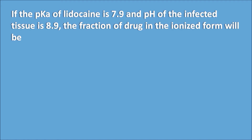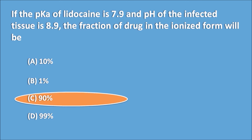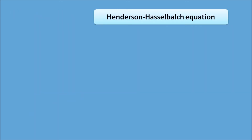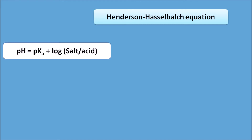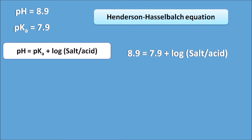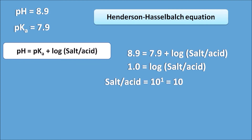If the pKa of lidocaine is 7.9 and the pH of the infected tissue is 8.9, the fraction of the drug in the ionized form will be: A. 10%, B. 1%, C. 90%, or D. 99%. The right answer is 90%. Using the Henderson-Hasselbalch equation — pH = pKa + log(salt/acid) for a weak acid — with pH 8.9 and pKa 7.9, we get 8.9 = 7.9 + log(salt/acid), so 1 = log(salt/acid), meaning salt/acid = 10.